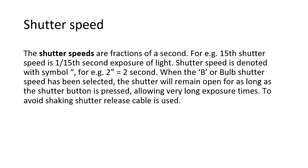Shutter speeds are fractions of a second. For example, a 15th shutter speed means 1/15th second exposure of light. Shutter speed is denoted with the symbol quotation mark. When the B or bulb shutter speed has been selected, the shutter will remain open till the shutter button is pressed, to allow very long exposure of light and to avoid shaking.